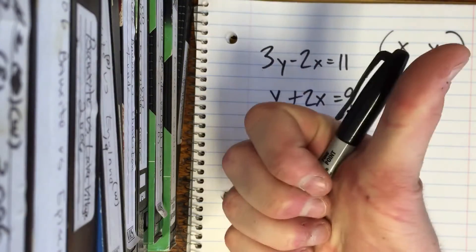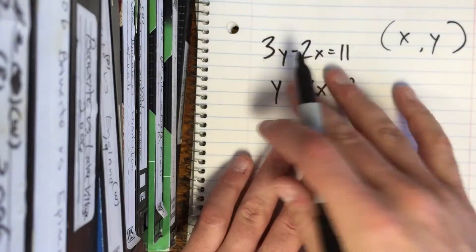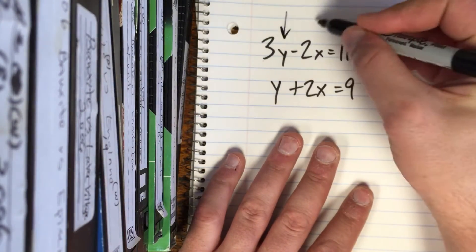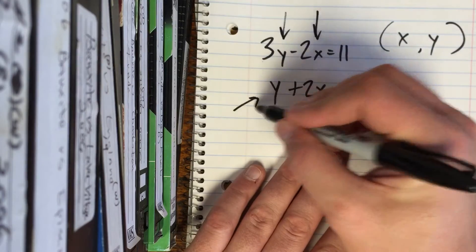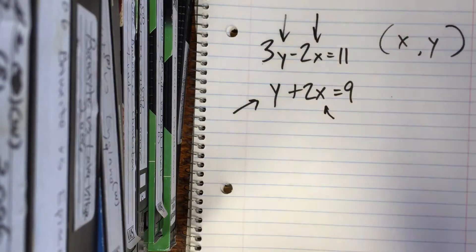Boom. You good? That's a thumbs up. It's hard to see when I do it that way. Okay, so here we go. What we want to do is essentially substitute either that y or that x for the other equation. That doesn't make sense? I'm going to show you.